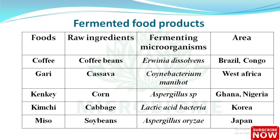Kenki — raw ingredient: corn, fermenting microorganism: Aspergillus pucis, area: Ghana, Nigeria. Kimchi — raw ingredient: cabbage, fermenting microorganism: lactic acid bacteria, area: Korea.